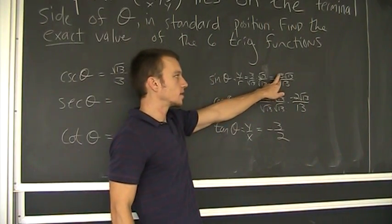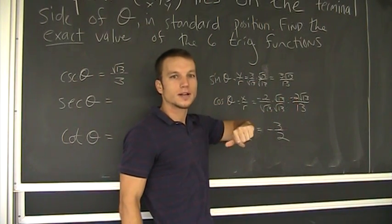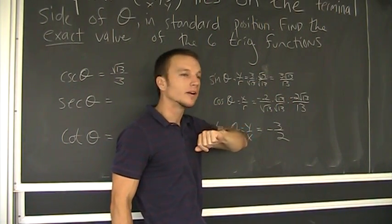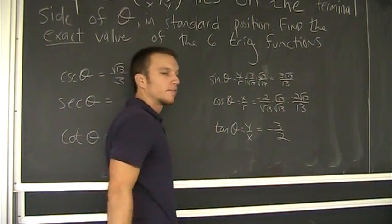Why didn't I take my simplified sine answer? Because if I flip that guy around, then I've got the root on the bottom. And I've got to go through the whole process of rationalizing the denominator. And I don't want to do that all over again.